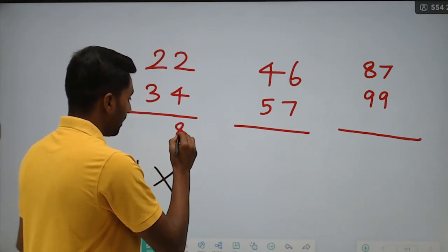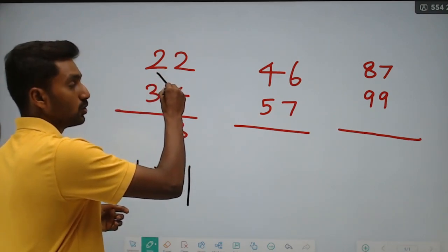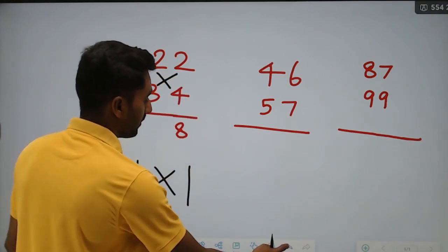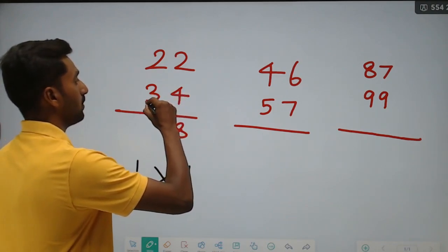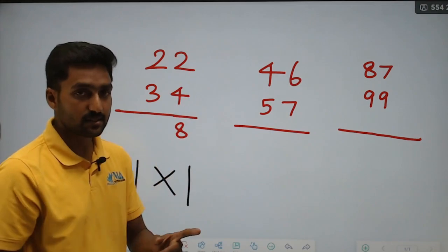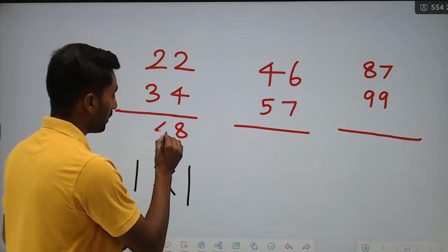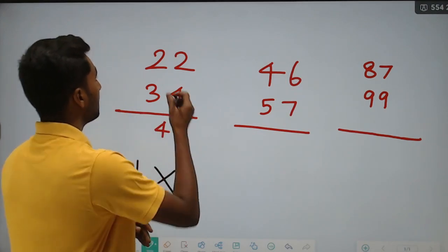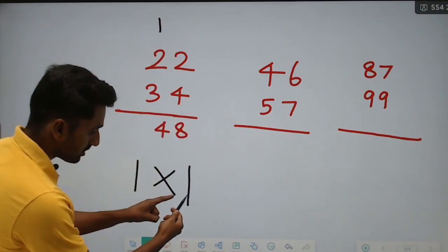For the cross step: 2 into 4 is 8, plus 3 into 2 is 6, so 8 plus 6 is equal to 14. From 14, write down 4 and carry 1.